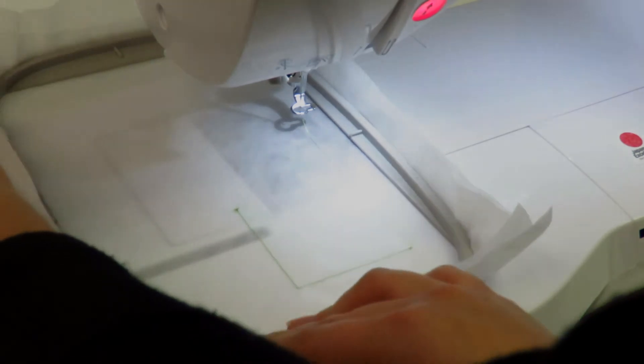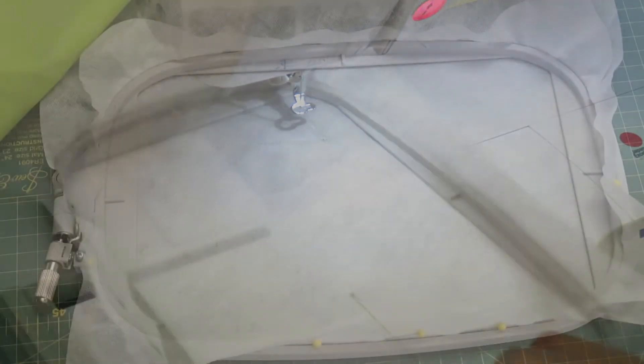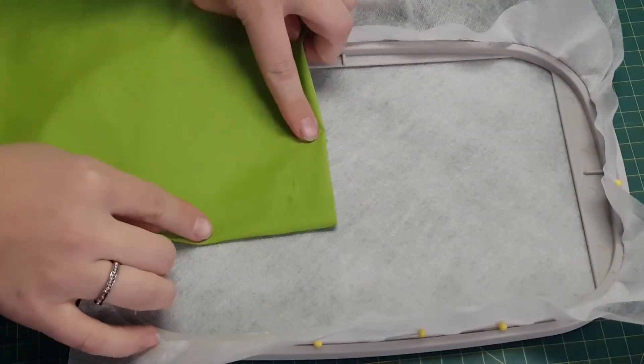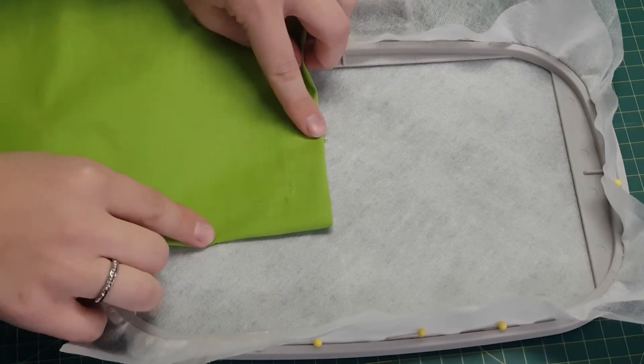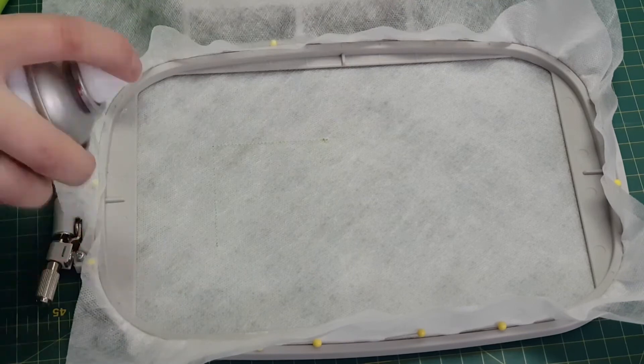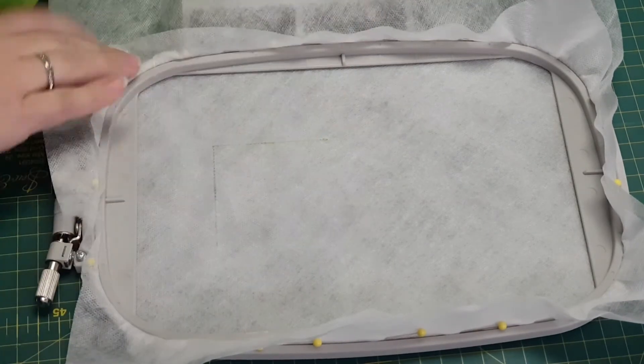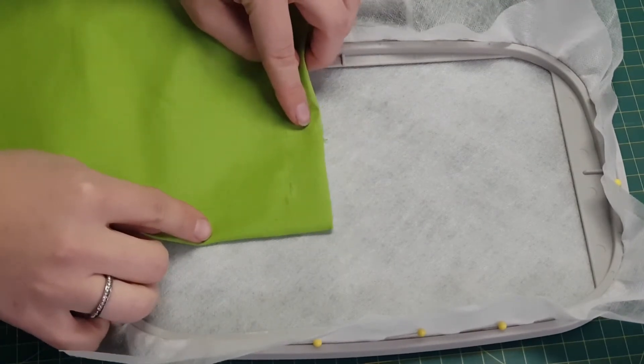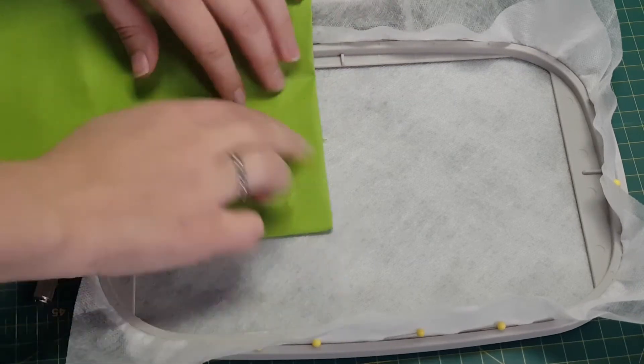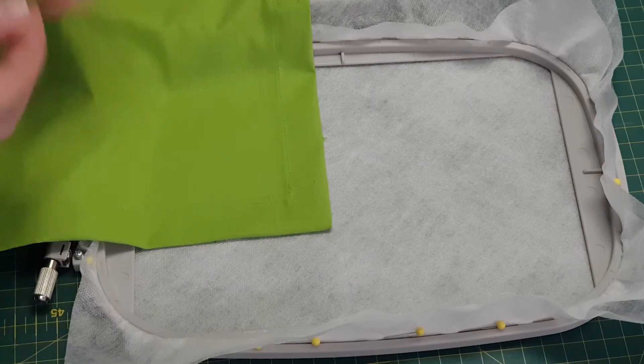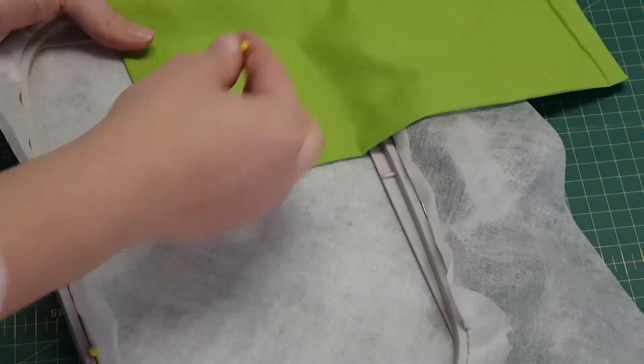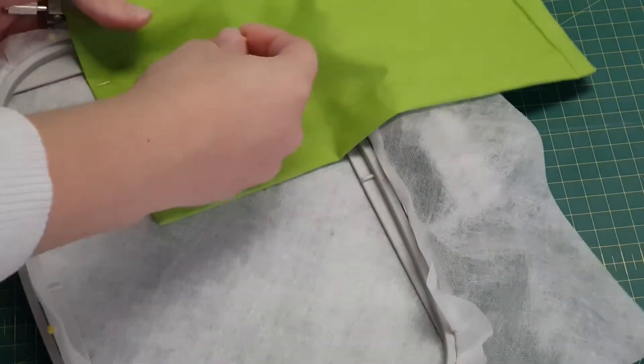Remove the embroidery frame and make sure the serviette aligns with the corners of the placement line. Use 505 or any other temporary spray adhesive to adhere the serviette to the Avalon Plus. Pin the serviette to the Avalon Plus on the outside of the placement line.